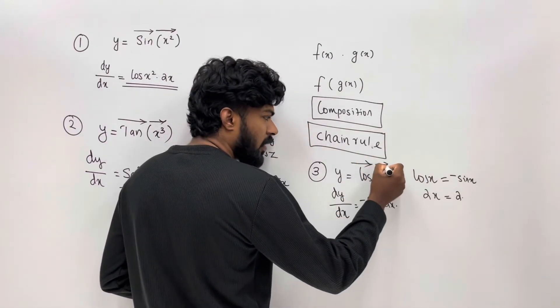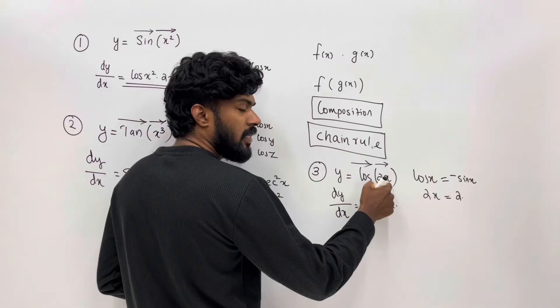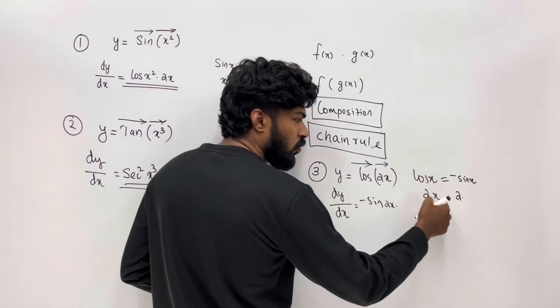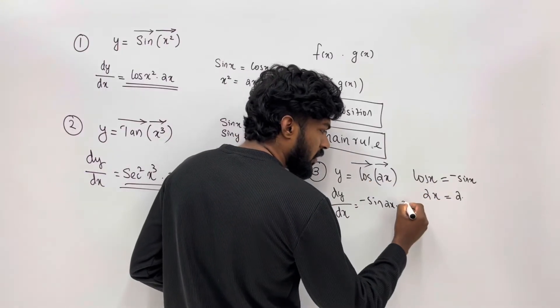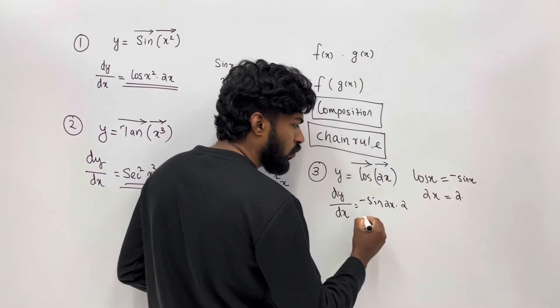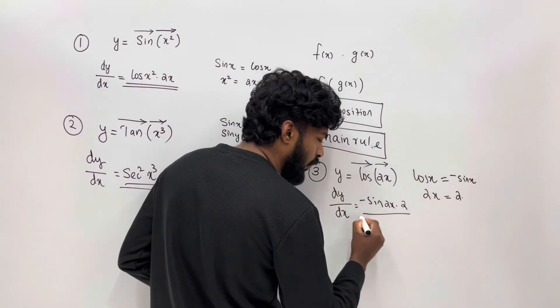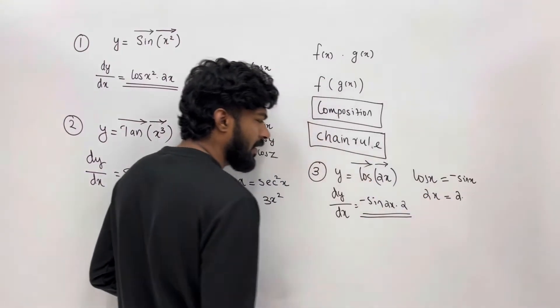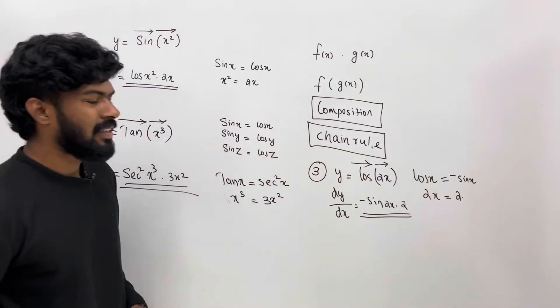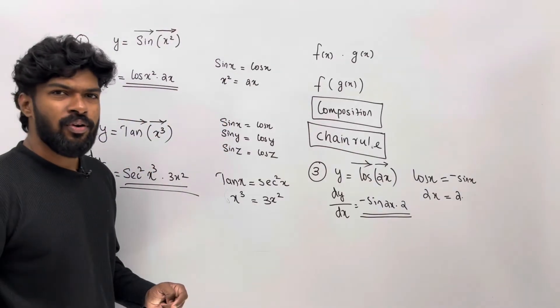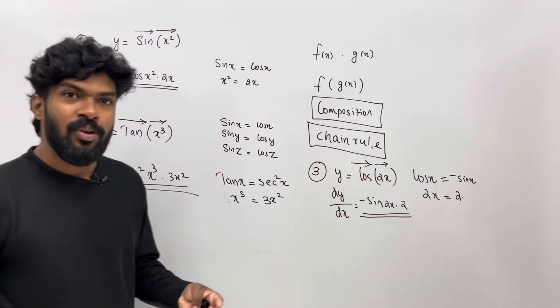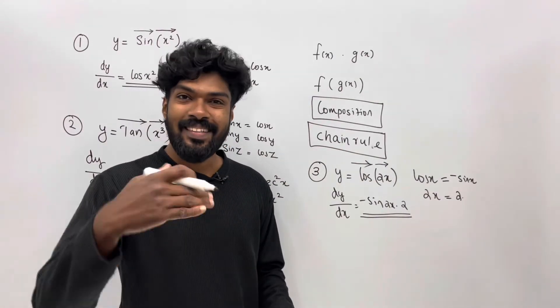How do you get the derivative of 2x? The answer: dy/dx equals minus sin(2x) times 2. Is it clear?